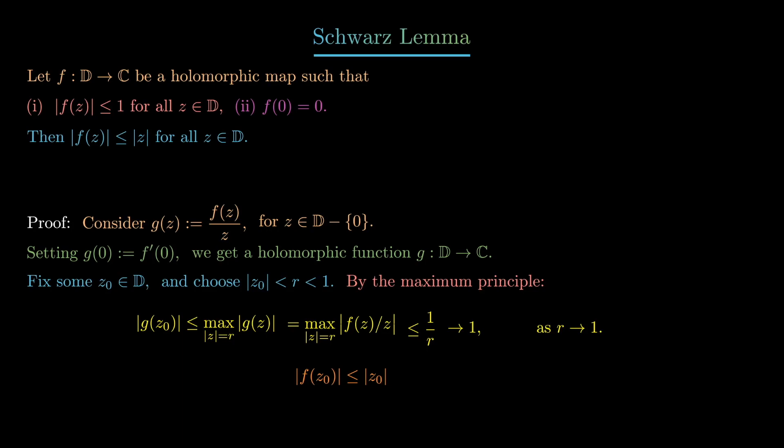Since this z0 was chosen arbitrarily, this tells us exactly what we want, so long as z0 is not zero. If z0 does happen to be zero, then the statement is obvious and there's nothing to prove.